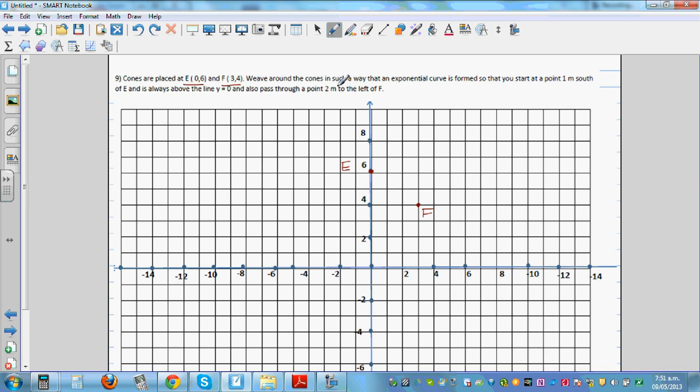Weave around the cones in such a way that an exponential curve is formed. You are weaving around these cones so that you start at a point 1 meter south of E. Each square is 1 meter by 1 meter. This is E and you are starting at 1 meter south of E. So the coordinate of this point is 0,5.